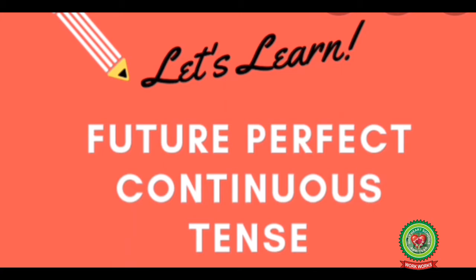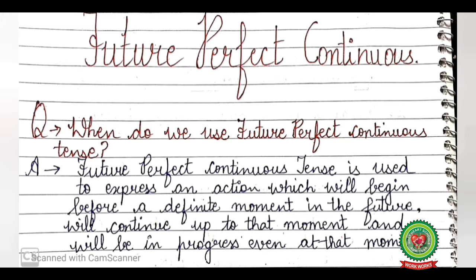Good morning students. Today in this video you will learn the rules of future perfect continuous tense and transformation of affirmative sentences into negative, interrogative, and negative interrogative. The question arises: when do we use future perfect continuous tense? It is used to express an action which will begin before a definite moment in the future, will continue up to that moment, and will be in progress even at that moment.